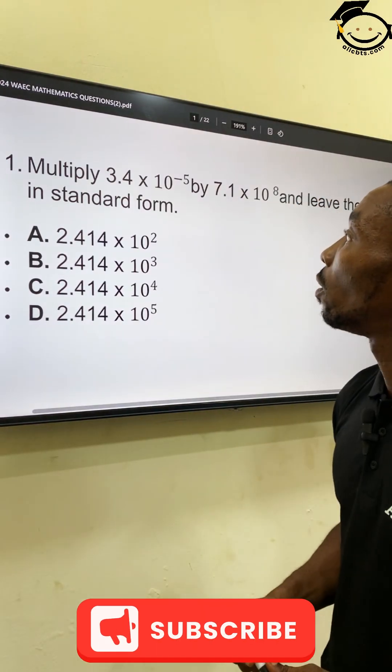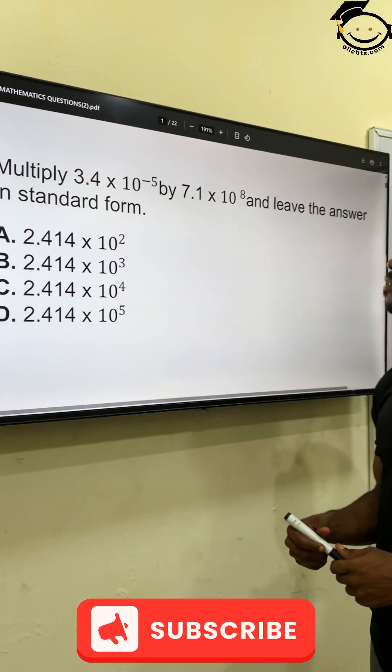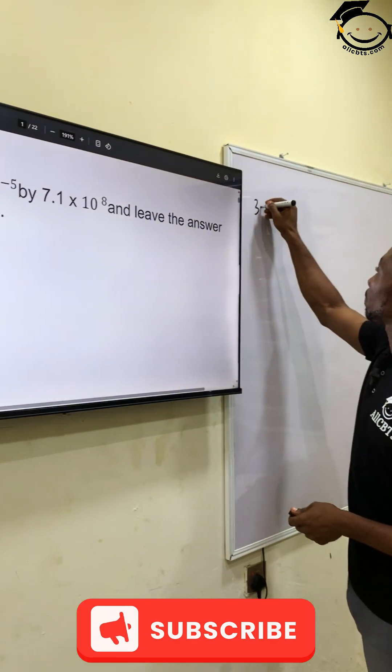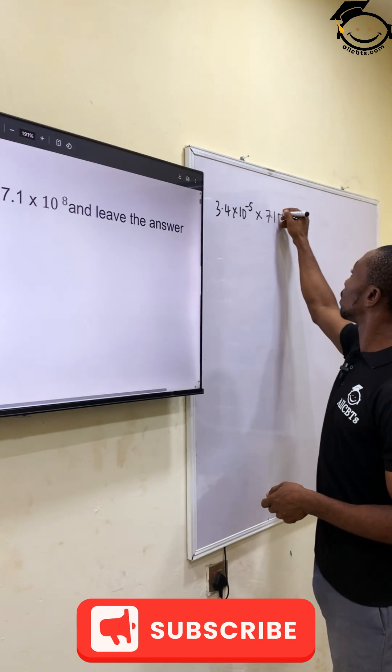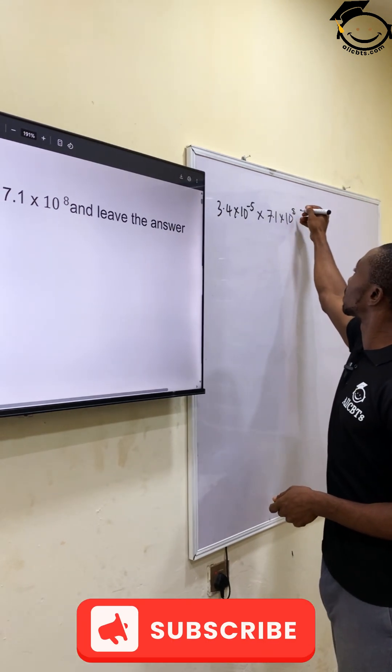Multiply 3.4 times 10 raised to the power minus 5 by 7.1 times 10 raised to the power 8.